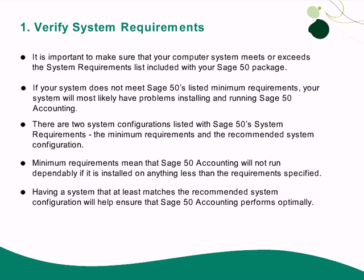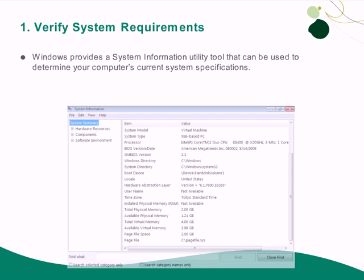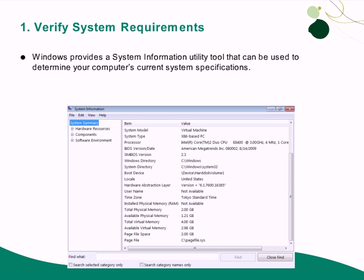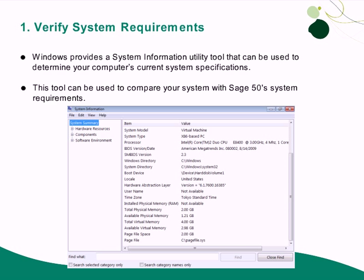Having a system that at least matches the recommended system configuration will help ensure that SAGE50 accounting performs optimally. Windows provides a system information utility tool that can be used to determine many of your computer's current system specifications. You can use this tool to compare your system with SAGE50's system requirements.